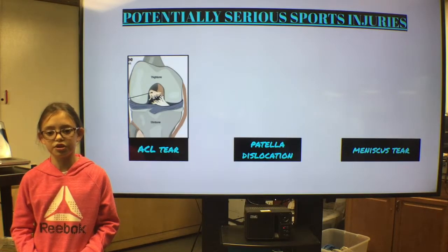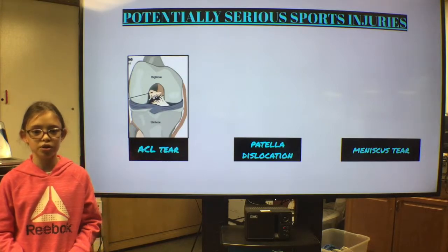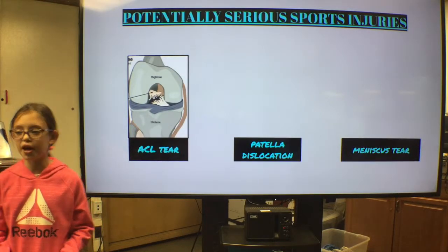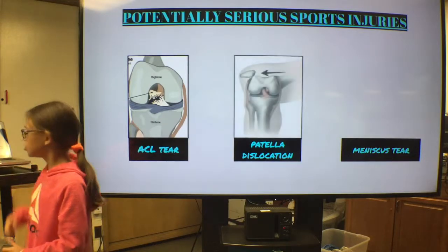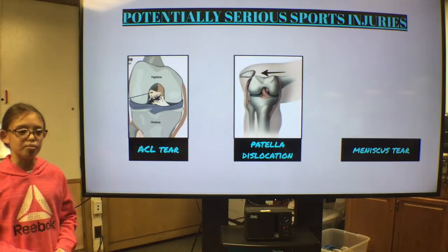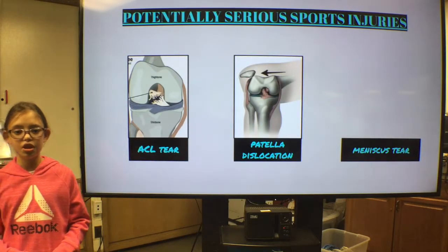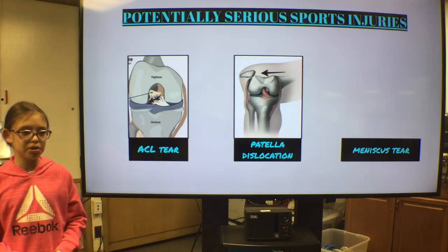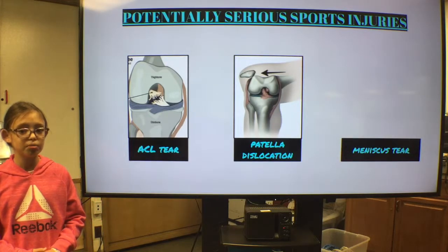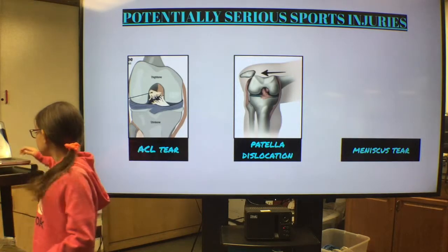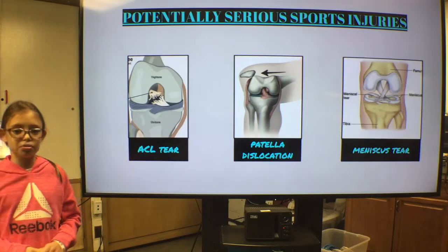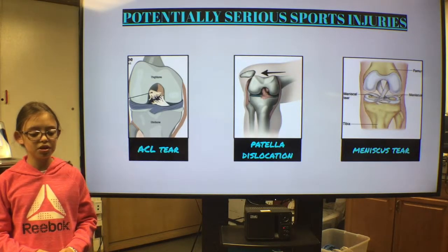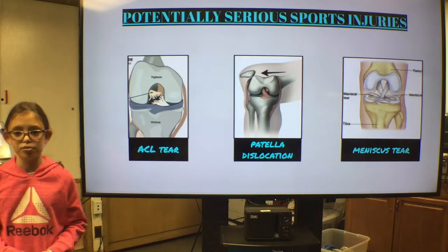Athletes that have this surgery are at risk of having another one. This means you might never get the full strength of your ligament back. A patella dislocation is when your patella comes out of its normal position. It can go back to its normal position on its own, but a repeated dislocation can become permanent. The meniscus is a cushion between your tibia and your femur, and a tear of the meniscus can compromise your mobility.